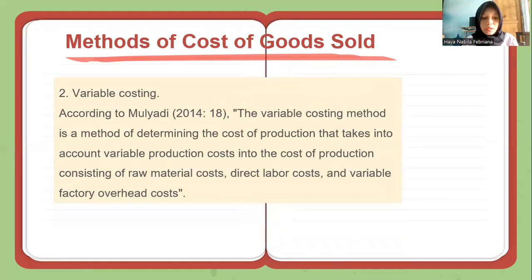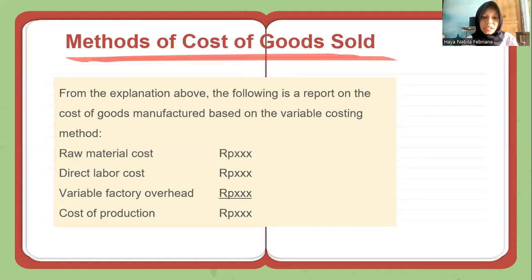The second is the variable costing method. According to Mulyadi, the variable costing method is a method of determining the cost of production that takes into account only variable production costs, consisting of raw material costs, direct labor costs, and variable factory overhead costs. The report on cost of goods manufactured based on the variable costing method includes raw material costs, direct labor costs, and variable factory overhead, resulting in the cost of production.